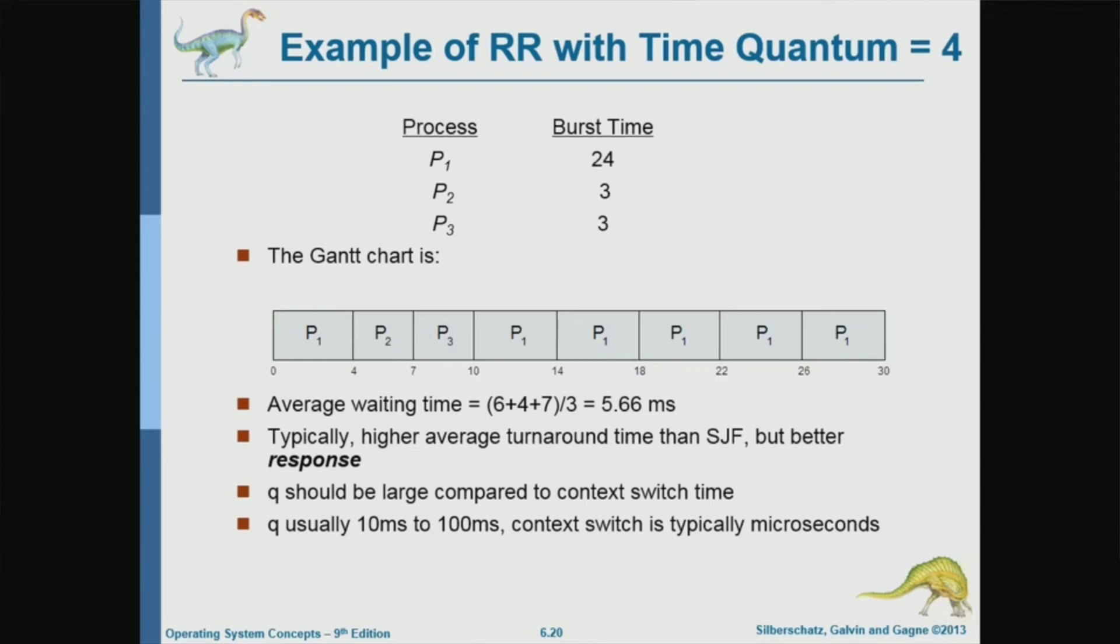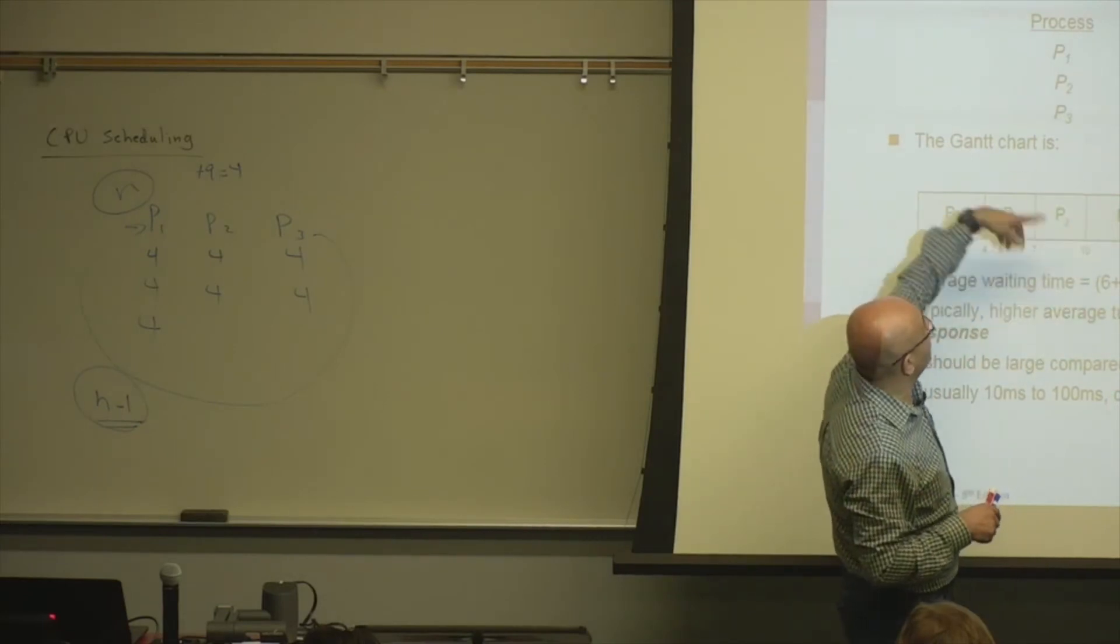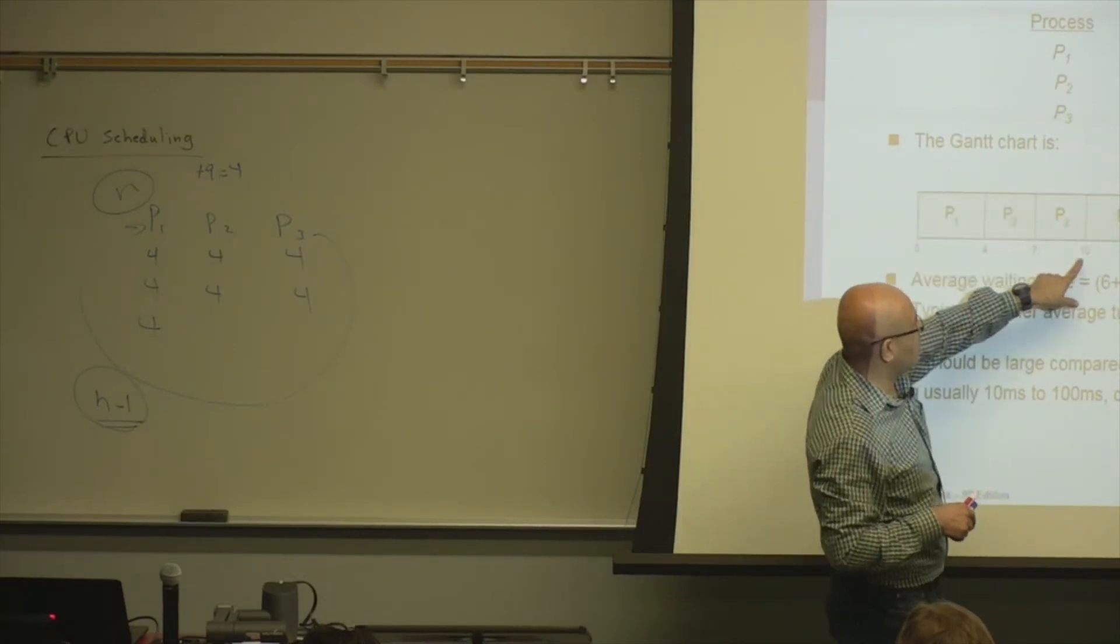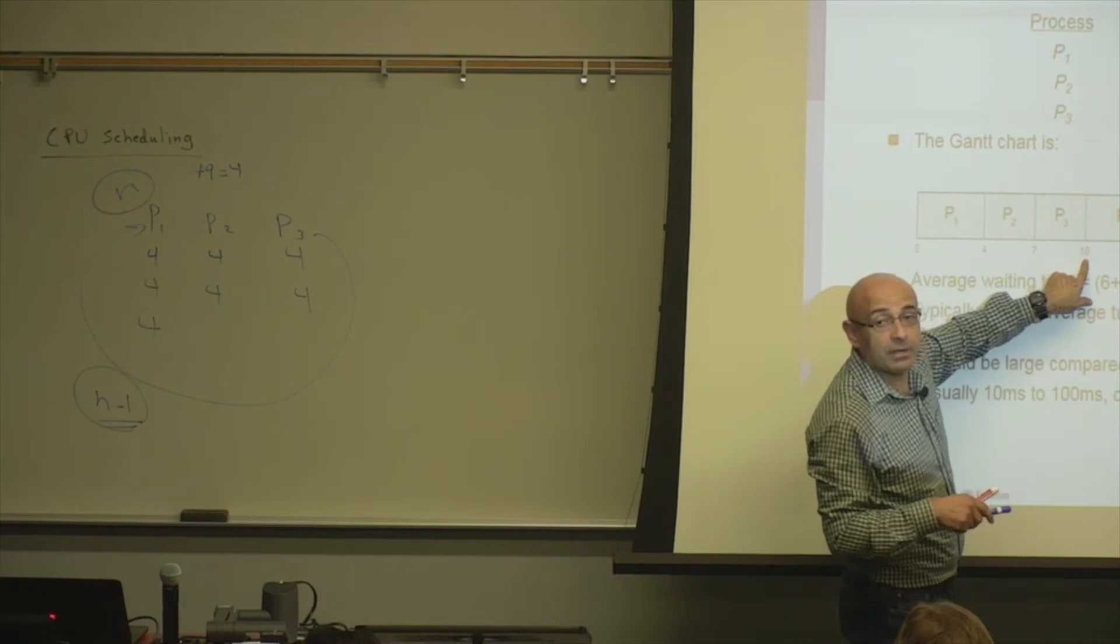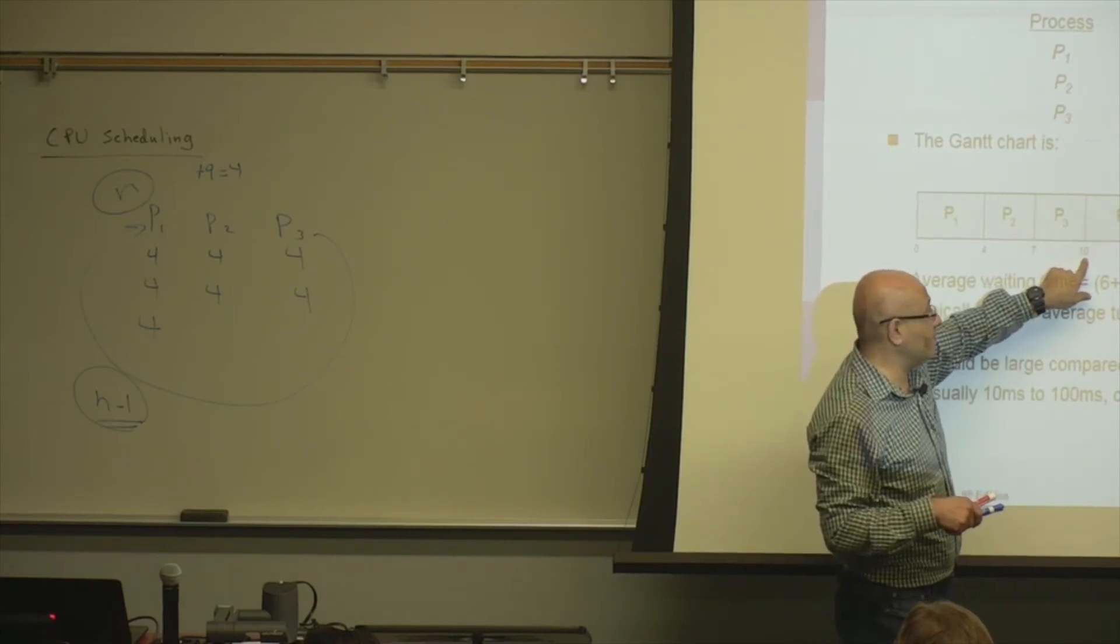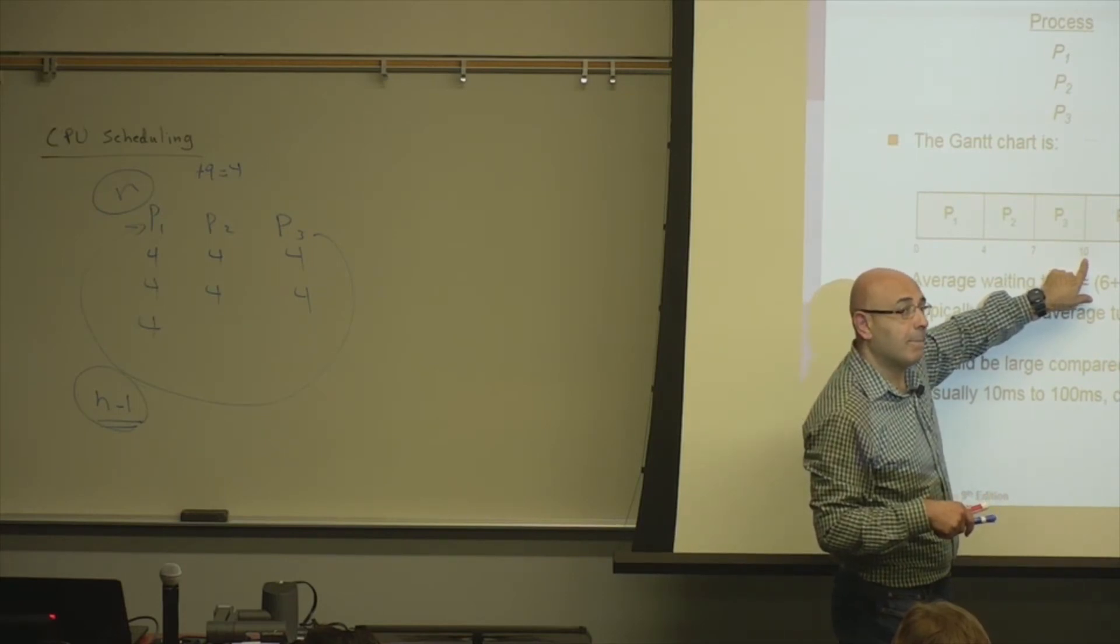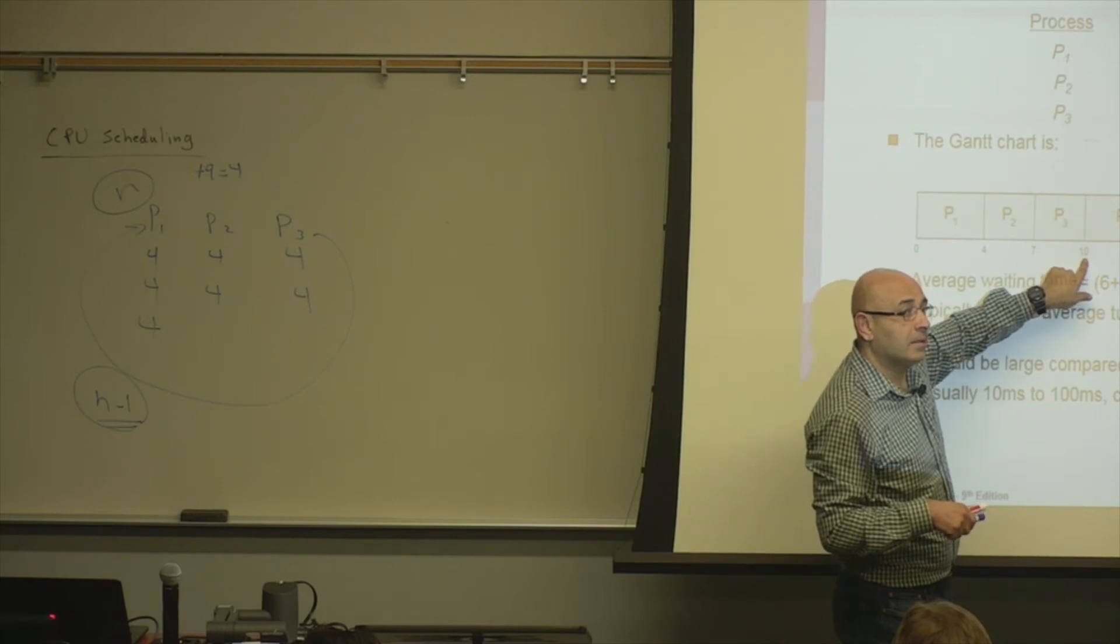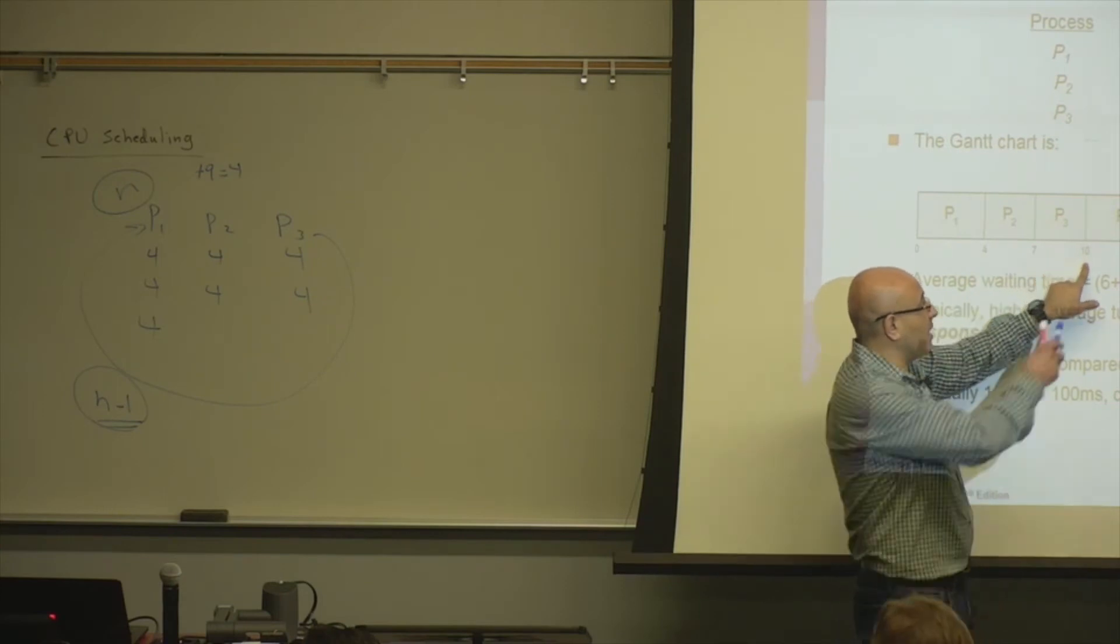So now the system will give how many time units to P1? Four. Now, does it make sense now for the system to give it all the remaining time, which is 20? So will the system say, okay, the remaining time is 20 and I'm going to give 20 time units to P1? Does it make sense to do that? For multiple reasons, this doesn't make sense. Why? If new processes come into the queue, wouldn't it have to check? Yeah, exactly. So if the system commits 20 time units for P1, then other processes may not get the CPU.